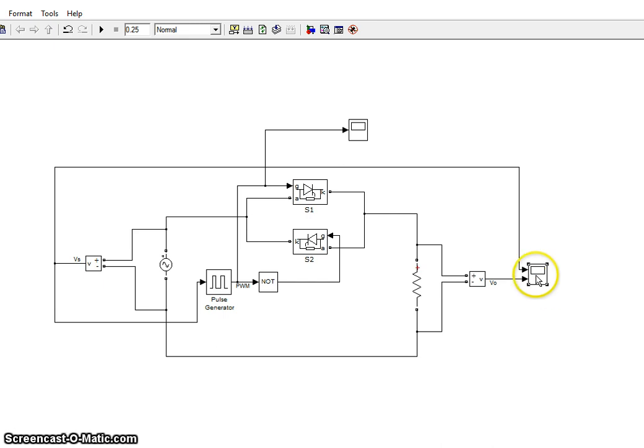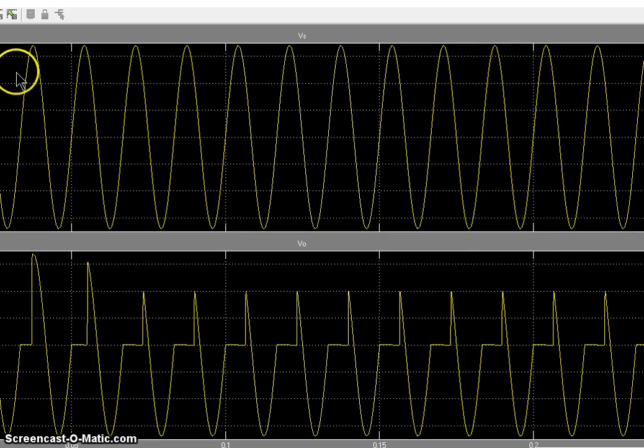We have the input voltage and the output voltage is being cut off based on the alpha, based on the alpha angle.